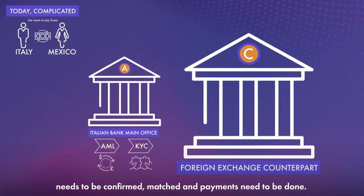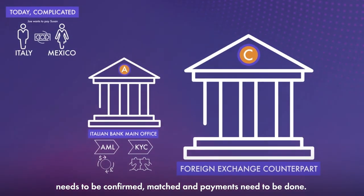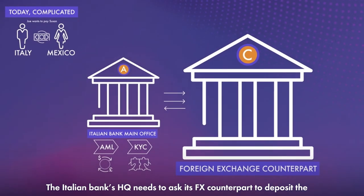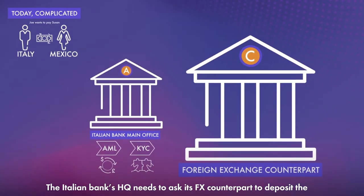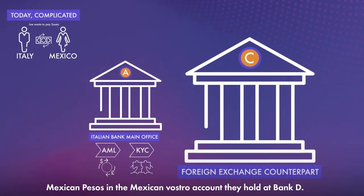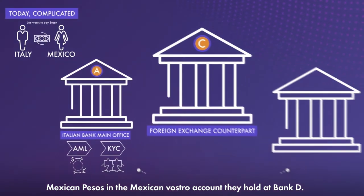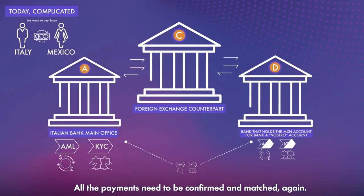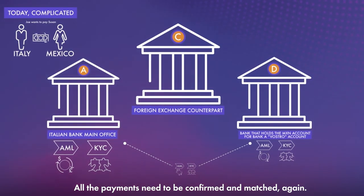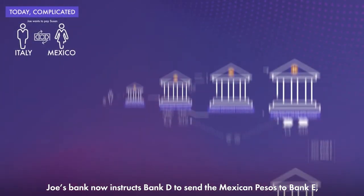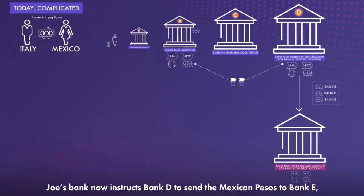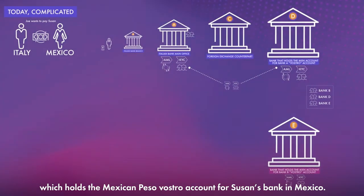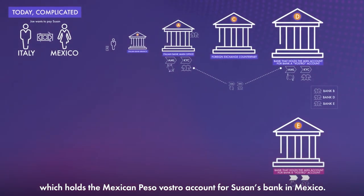The FX transaction needs to be confirmed, matched, and payments need to be done. The Italian bank's HQ needs to ask its FX counterpart to deposit the Mexican Pesos in the Mexican Vostro account they hold at Bank D. All the payments need to be confirmed and matched again. Joe's bank now instructs Bank D to send the Mexican Pesos to Bank E, which holds the Mexican Peso Vostro account for Susan's bank in Mexico.